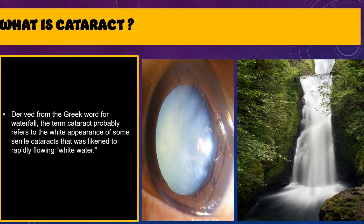If a cell has organelles in it, the light will get scattered, and therefore to avoid scattering of light, the lens does not have any kind of organelles. Whenever this transparency of the lens is lost, there will be opacification or cloudiness of the lens, and that is called cataract. The term cataract is actually derived from the Greek word for waterfall. Because of the rapid flow of water, the waterfall looks cloudy, and the senile cataract appearance is likened to rapidly flowing white water.